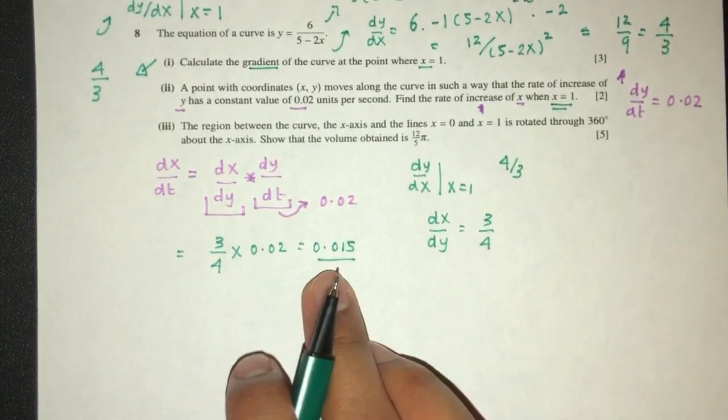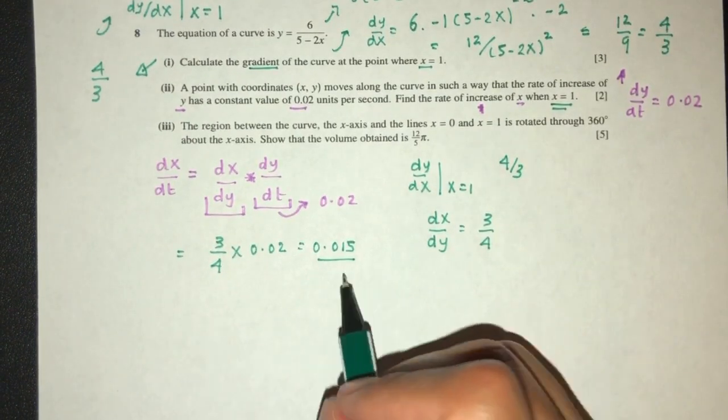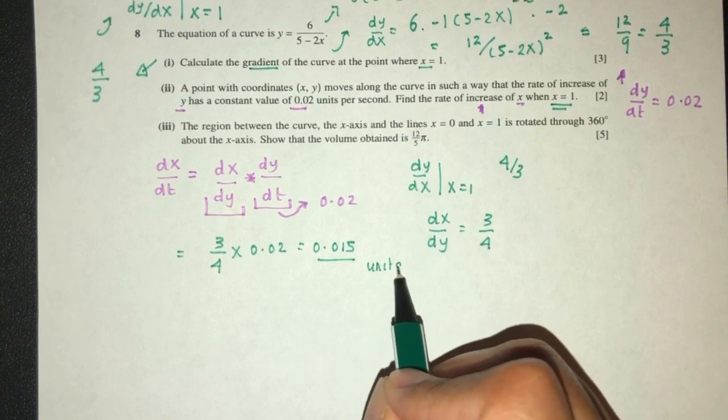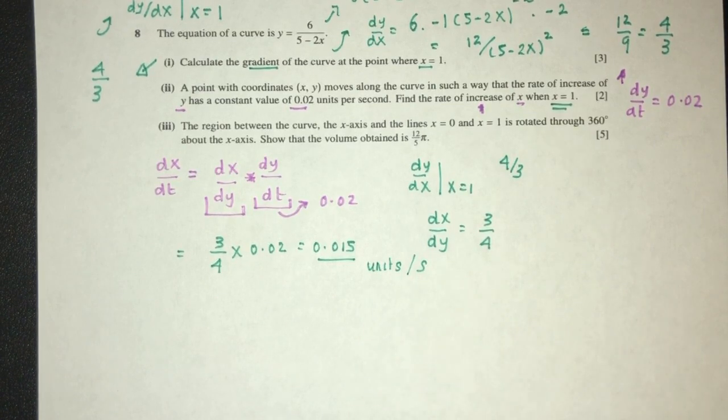This is the rate of increase of x. We can write units per second. That will be part two of the question. Now for part three, the region between the curve, the x-axis, and the lines...